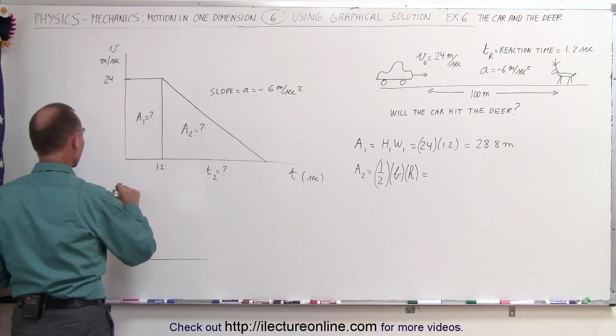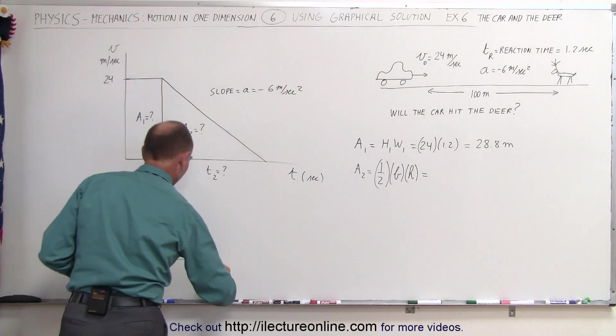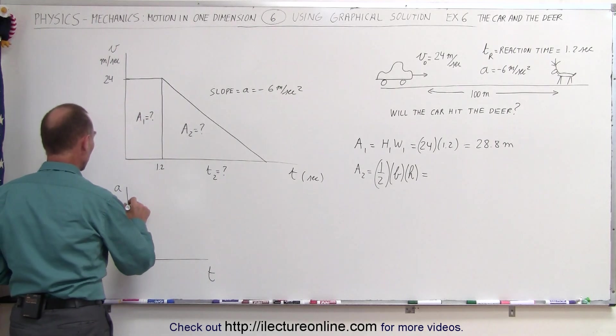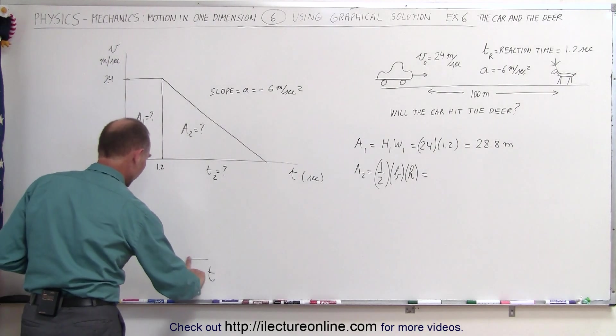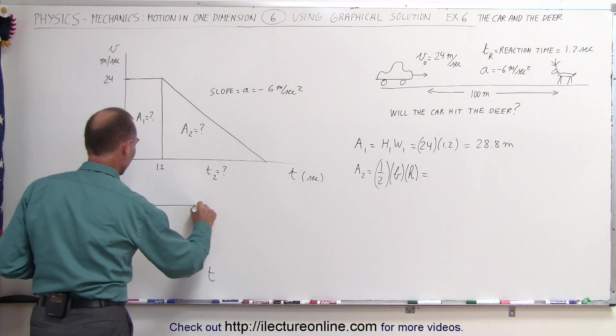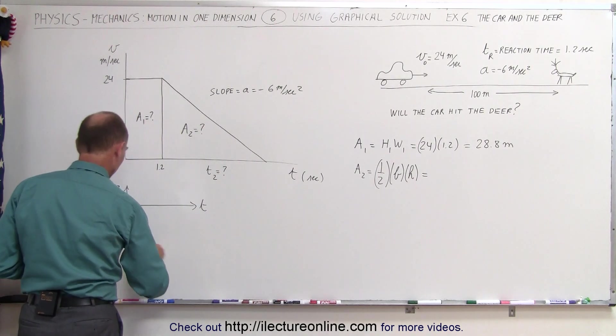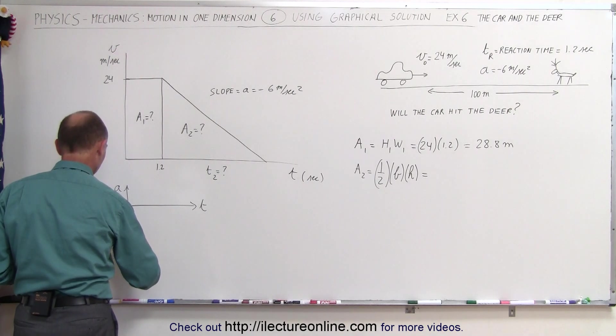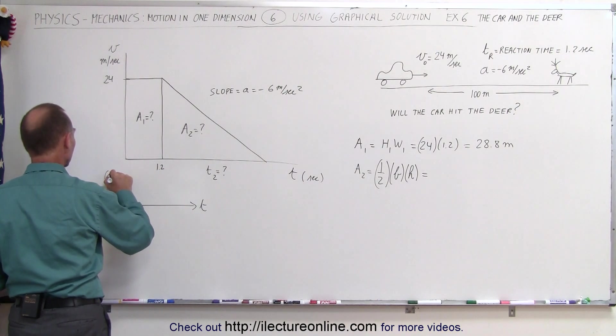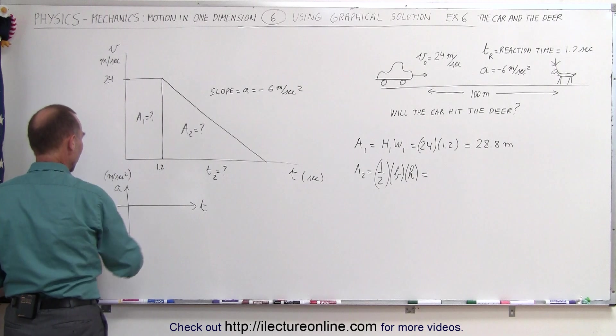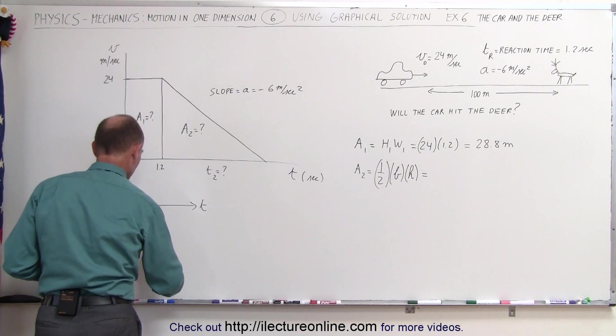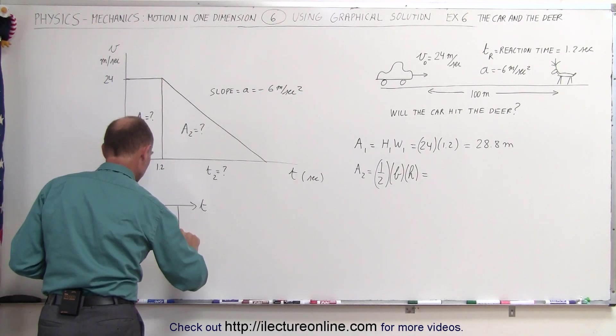For that portion of the problem, we have acceleration versus time. The negative acceleration is minus 6 meters per second squared, and the area here, let's call this area 3, represents the velocity change.